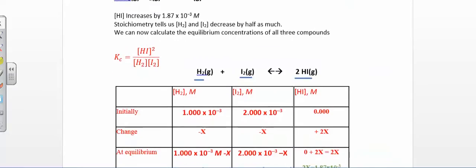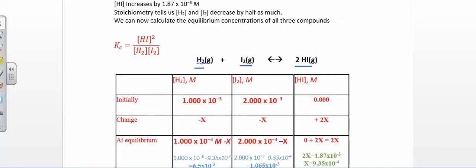What we can do is set up something called an ICE table. Looking at the stoichiometry: for every one mole of hydrogen that reacts with one mole of iodine, you make two moles of hydrogen iodide. If I initially have 1×10⁻³ M of hydrogen and 2×10⁻³ M of iodine, and no products initially, I know I'm going to use up my reactants and make products. For every one mole of H₂ I use, I use one mole of I₂ and make two moles of HI — from those stoichiometric coefficients.